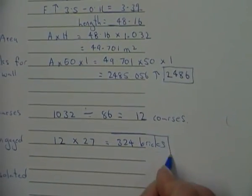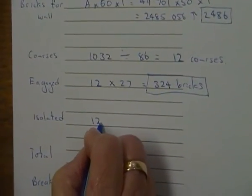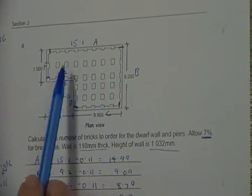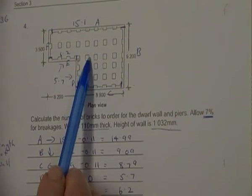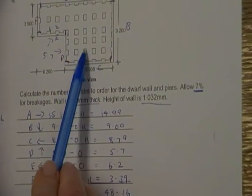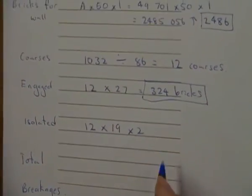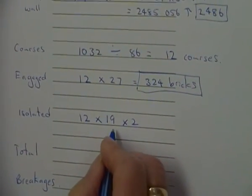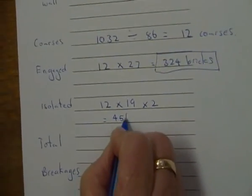Just for our engaged piers. Now our isolated, we're going to use our number of courses 12 times the number of isolated piers, so just the ones in the middle. 1, 2, 3, 4, 5, 6, 7, 8, 9, 10, 11, 12, 13, 14, 15, 16, 17, 18, 19. 12 times 19. Now don't forget to double it because you have 2 lots of bricks on each level, so we get an answer of 456 bricks.